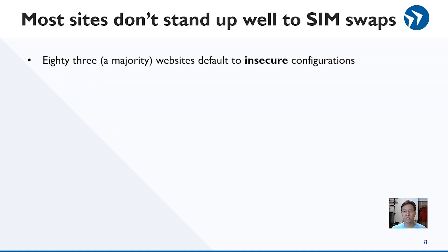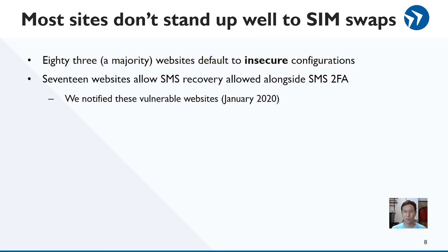We found that most of these websites recommend SMS for two-factor authentication. This means that if you get SIM swapped, your 2FA can now be bypassed. The attacker would then only need your password, which they could obtain via data dumps, social engineering, or compromising a means of account recovery such as email. More importantly, we found 17 additional sites that allow for account takeover with a SIM swap alone. We notified these websites as part of the responsible disclosure process, and some websites have responded by making fixes and reporting them back to us.